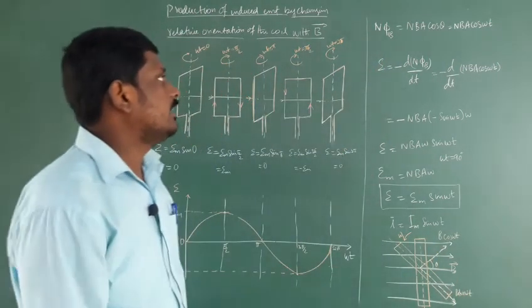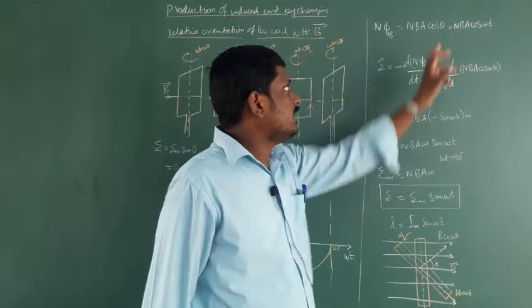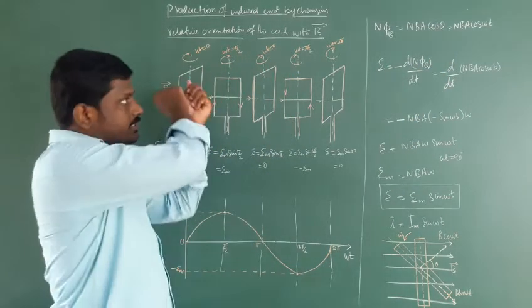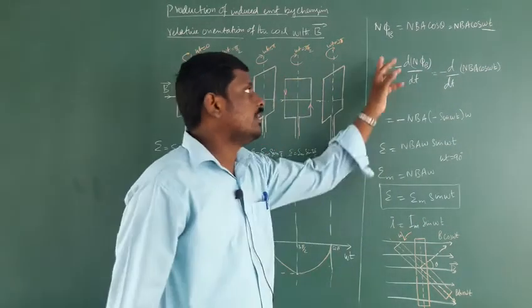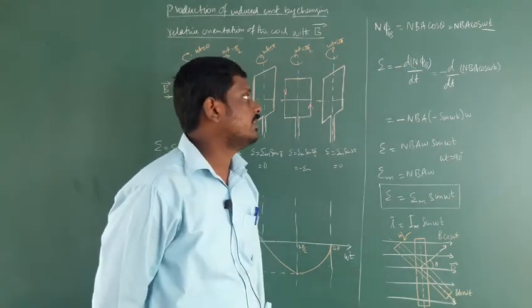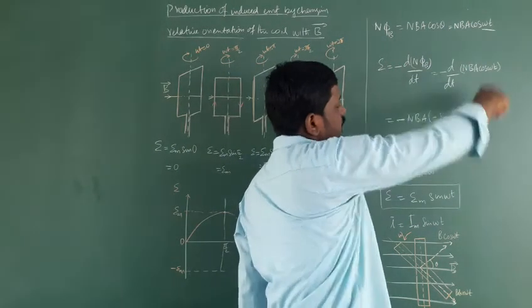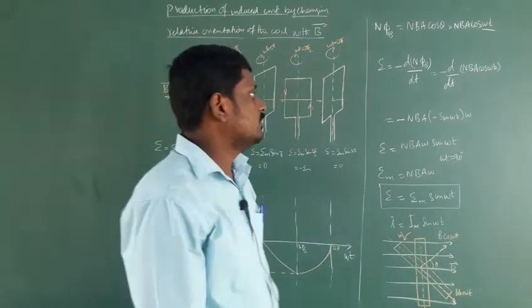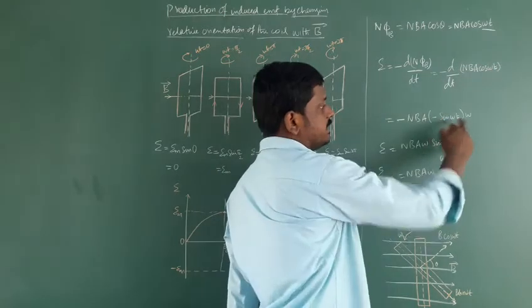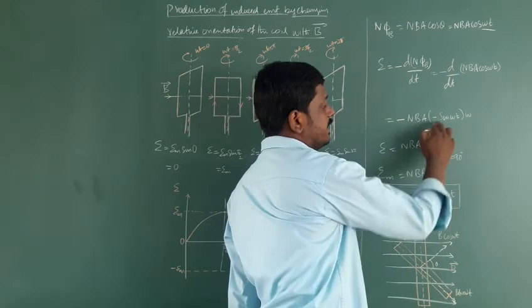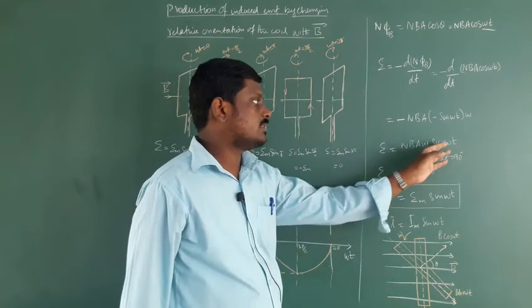The flux linkage with the coil Nφ_B is equal to NBA cos θ. Here θ = ωt since we are rotating in the anticlockwise direction. According to Faraday's law of electromagnetic induction, the induced EMF ε = −d(Nφ)/dt. So Nφ = NBA cos ωt. Differentiating NBA cos ωt with respect to time: the differentiation of cos ωt gives −sin ωt, and differentiation of ωt gives ω. The two negatives cancel, giving induced EMF ε = NBAω sin ωt.